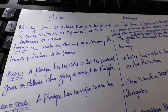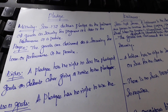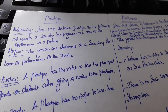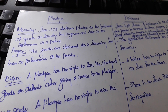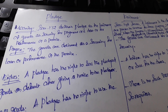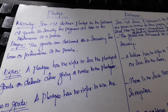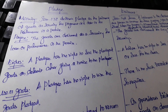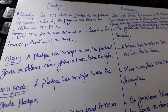Section 172 of the Indian Contract Act 1956 defines Pledge as the bailment of goods as the security for payment of a debt or for performance of a promise. The goods are delivered as a security for a loan or the performance of the promise.